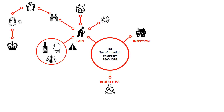After Queen Victoria gave birth to her eighth child while using chloroform in 1853, it became widely used in operating theatres and to reduce pain during childbirth. Chloroform affected the heart and a number of young physically fit patients died after inhaling it. However, in 1848, John Snow developed an inhaler that regulated the dosage and reduced the number of deaths.